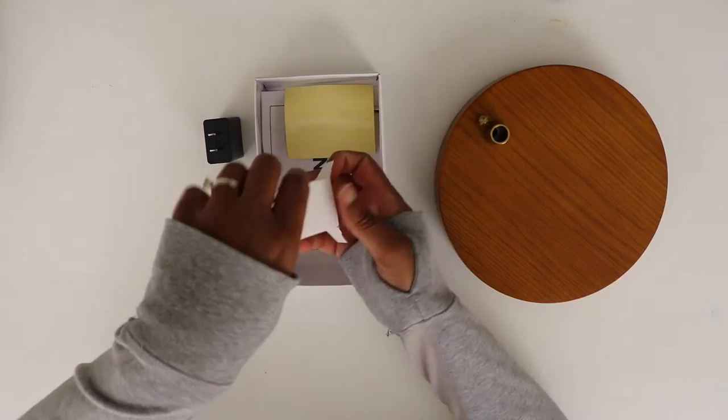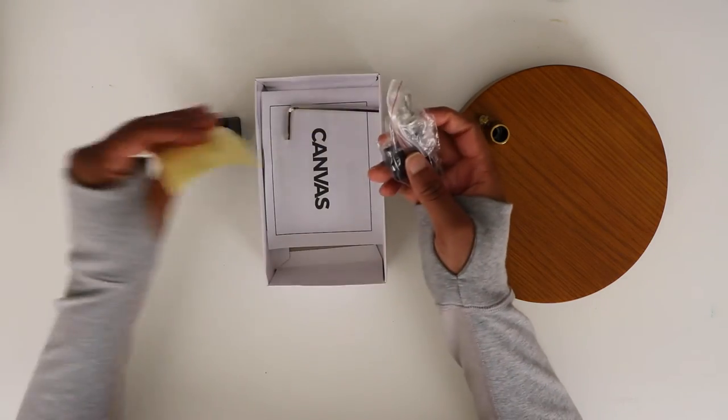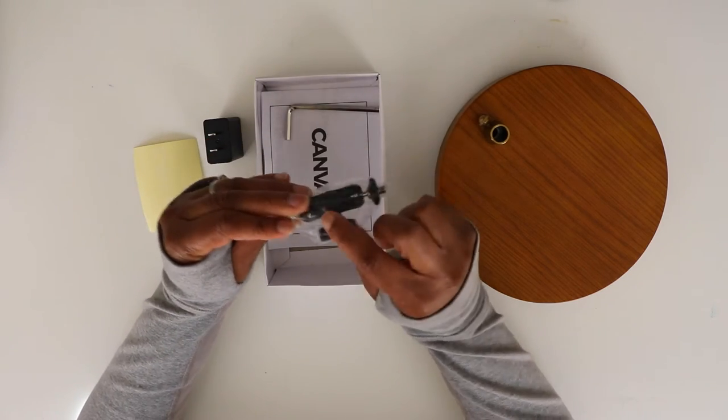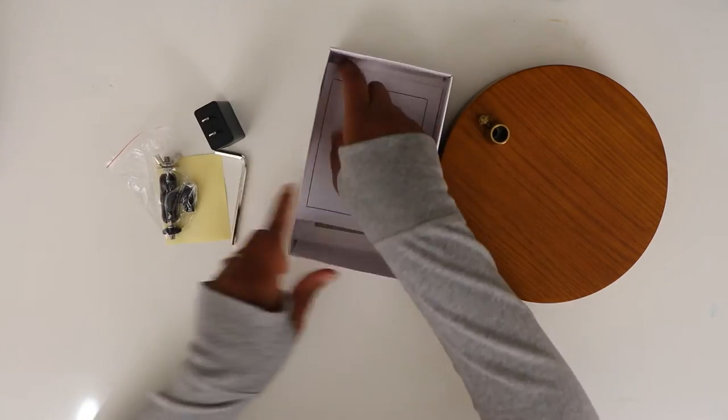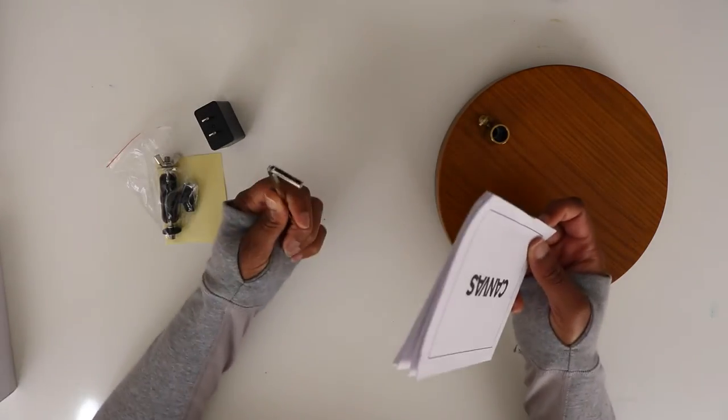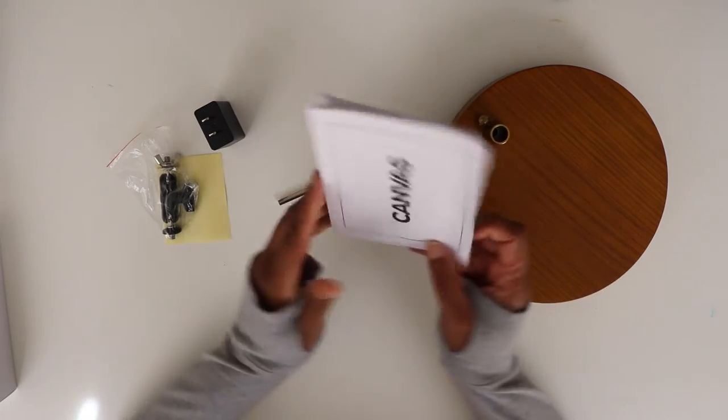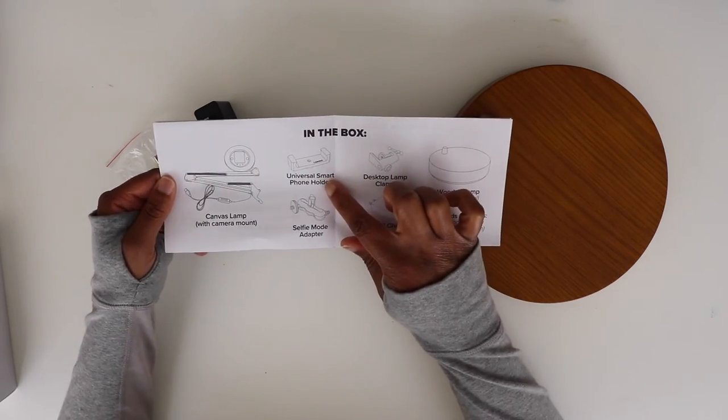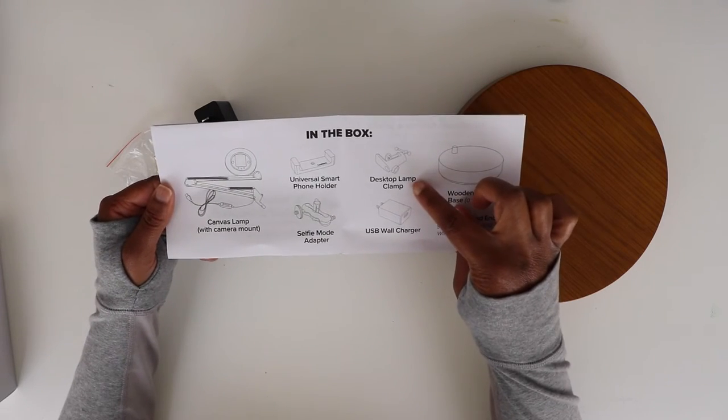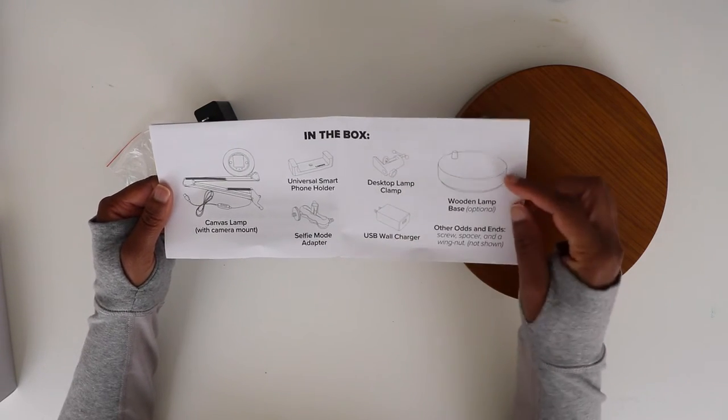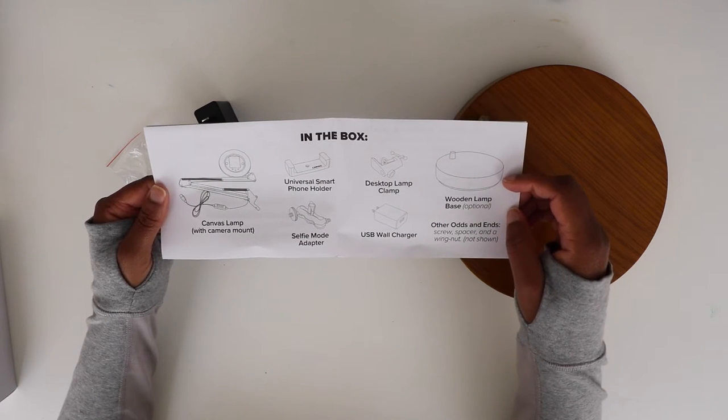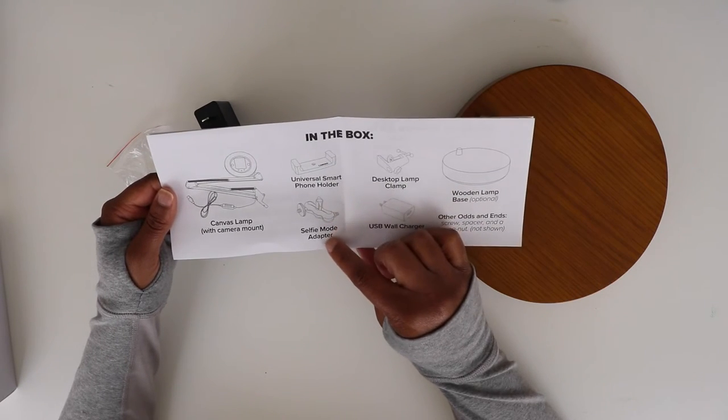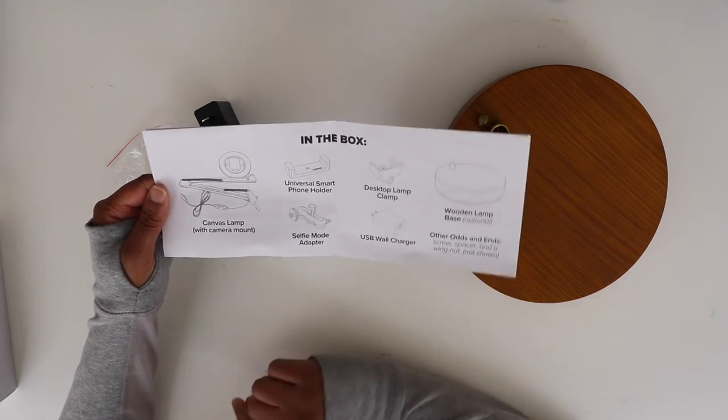And let's see what's in here. So this is the piece I believe that's going to connect to here maybe. And then one of those, I don't even know what you call this I want to say a wrench but I know it's not a wrench. But let's see in the box. So you get the canvas lamp universal smartphone holder, desktop lamp clamp, USB wall charger, wooden lamp base and other odds and ends like a screw spacer and wing nut which is not shown and then a selfie mode adapter. Oh selfie mode adapters that's a little bit different.